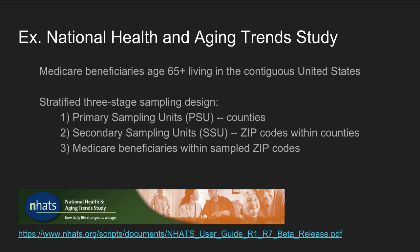A second example of a stratified sampling design is the National Health and Aging Trends Study. The target population was Medicare beneficiaries age 65 and older living in the 48 contiguous United States. They used a three-stage sampling design: counties were the primary sampling units, zip codes within those counties were the secondary sampling units, and from within those zip codes, Medicare beneficiaries were identified — designed to generalize about older Medicare beneficiaries in the U.S.